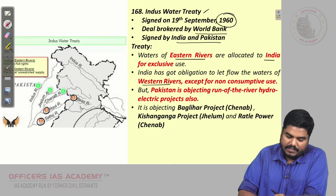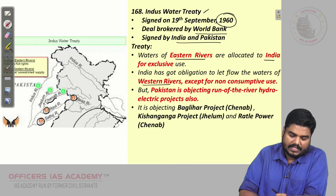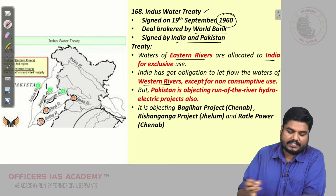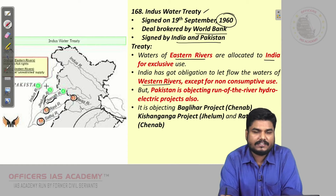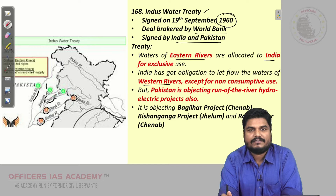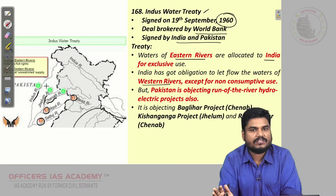The western rivers are Chenab, Jhelum, and Indus. These rivers are called the western rivers, which can be exclusively used by Pakistan.